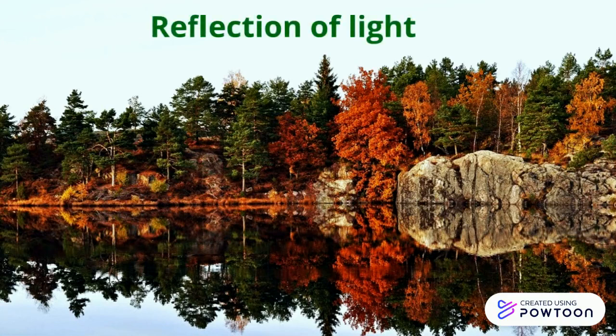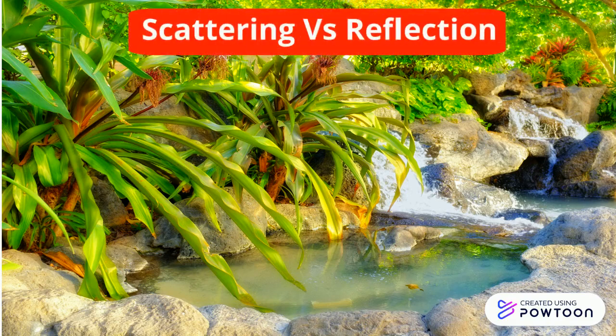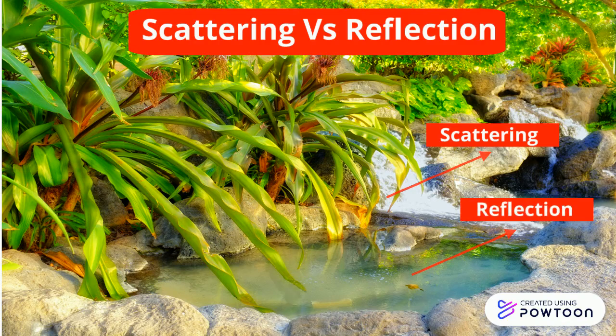First we will distinguish between two phenomena that light undergoes: scattering and reflection. Light is scattered when it falls on leaves and reflected when it falls on a water surface.